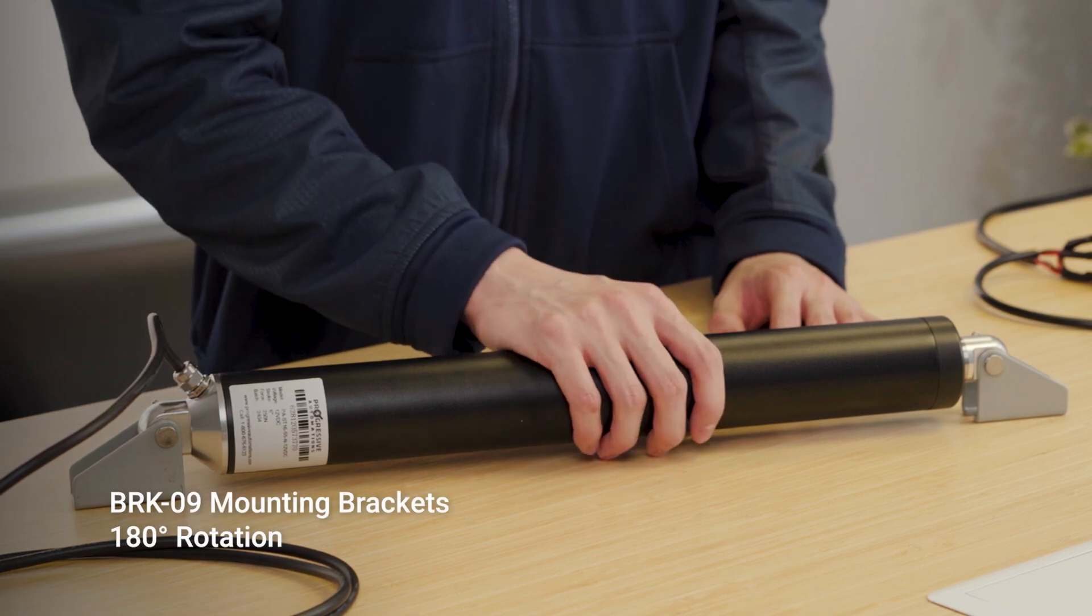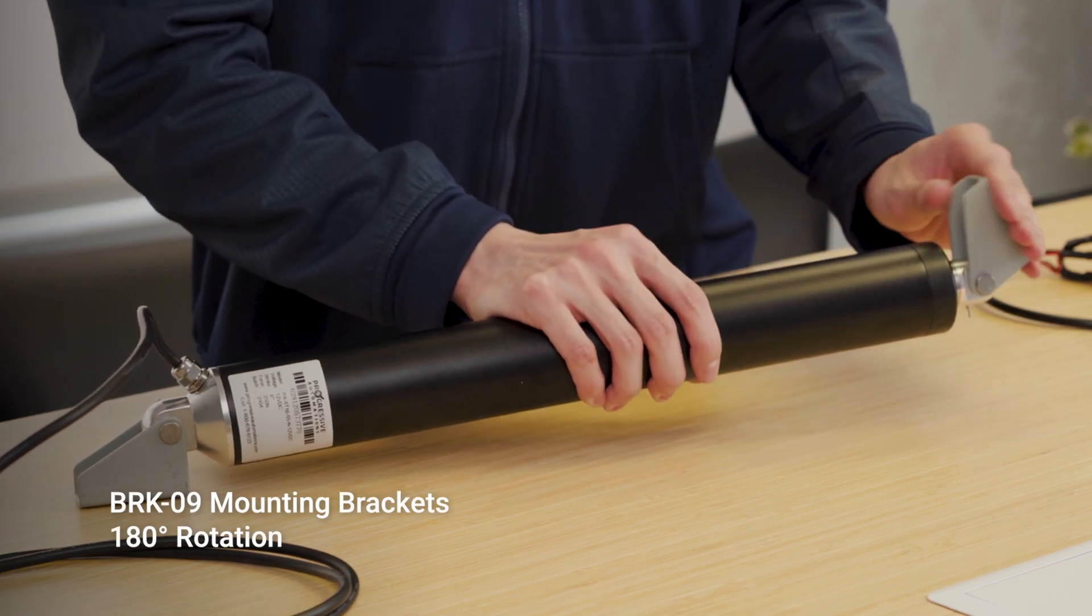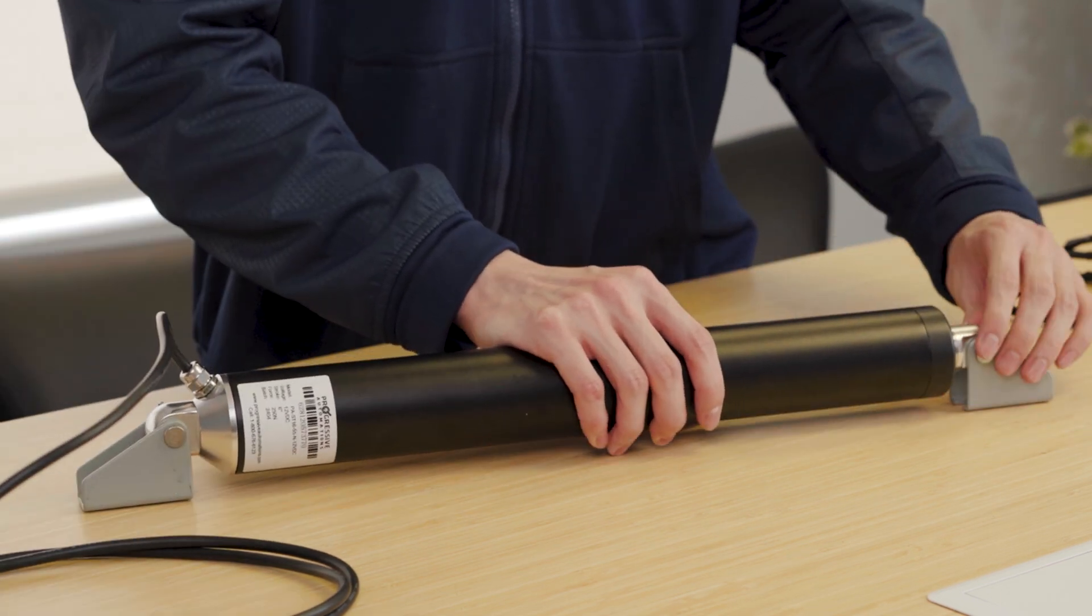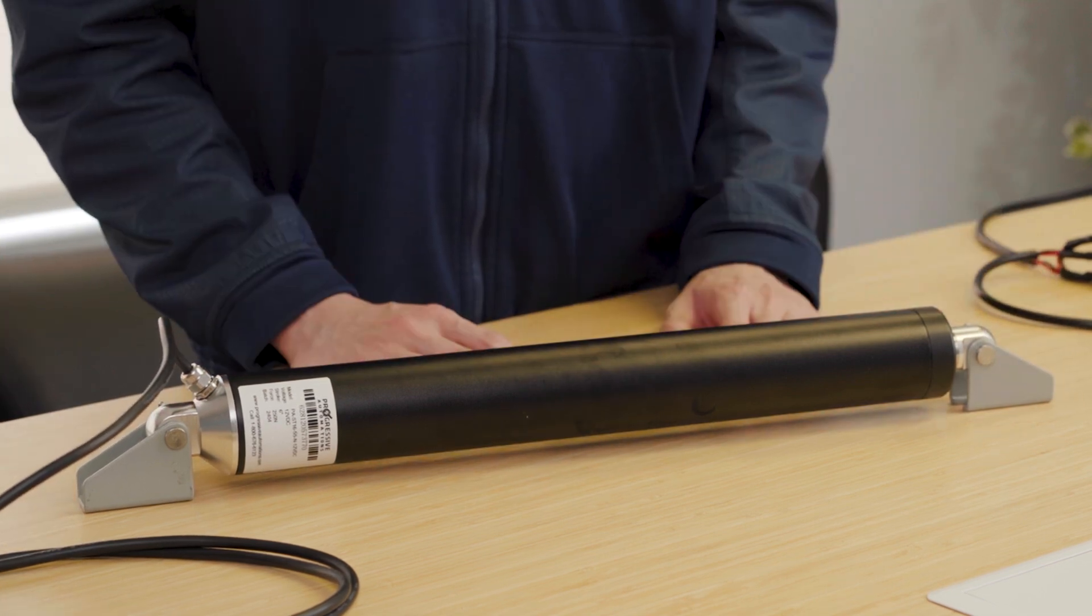The BRK09 bracket set allows for 180 degrees of rotation when mounted on either end of these actuators.